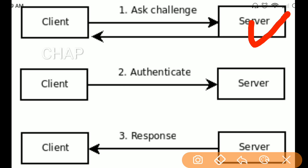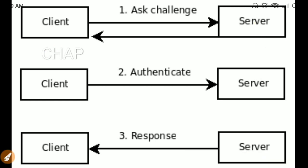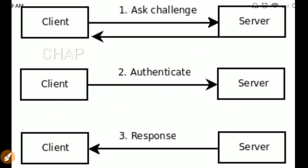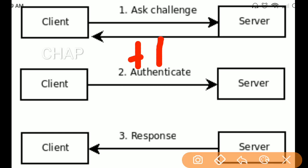This random string is also called a nonce. Once the client receives this random string, the client combines it with its password and then uses a hashing algorithm — for example, Message Digest 5 or MD5 — to create a hash value. The client then sends this hash value to the server.